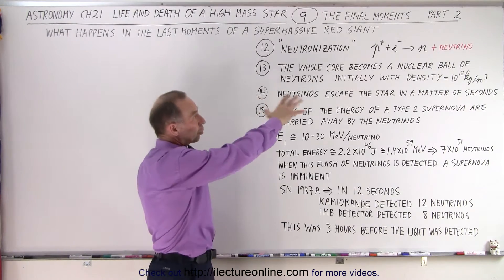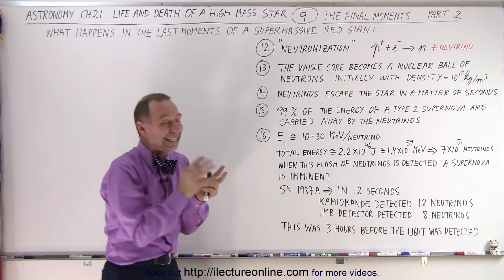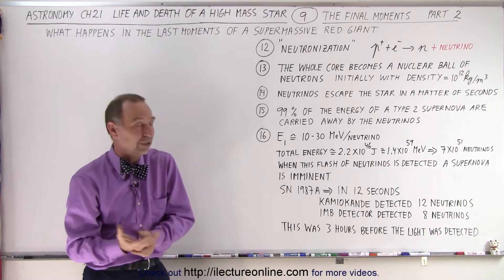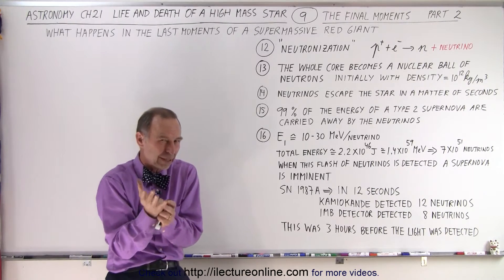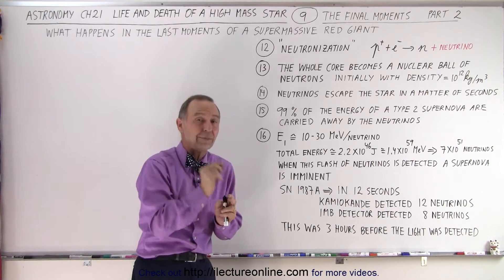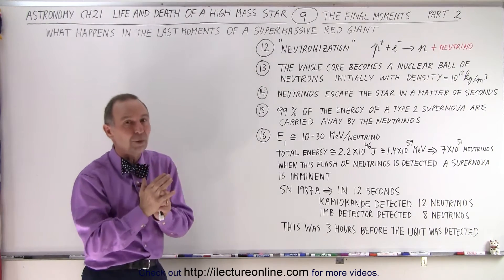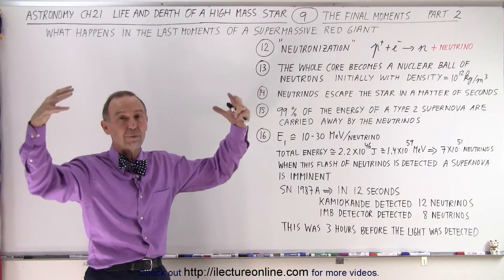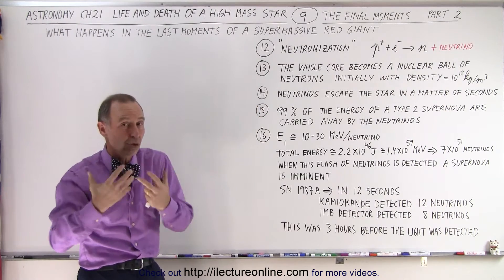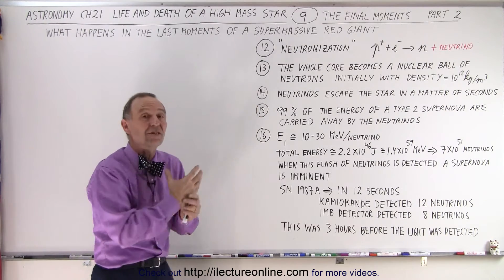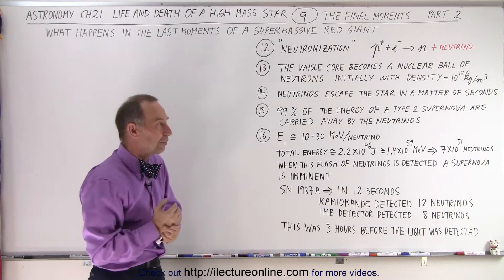The whole core becomes a nuclear ball of neutrons initially with a density of 10 to the 12 kilograms per cubic meter. So we're stepping backwards just a little bit in time, small fraction of a second to show you what happens in those few moments until the whole core becomes a ball of nuclear material, primarily neutrons, at a density of 10 to the 17 kilograms per cubic meter.